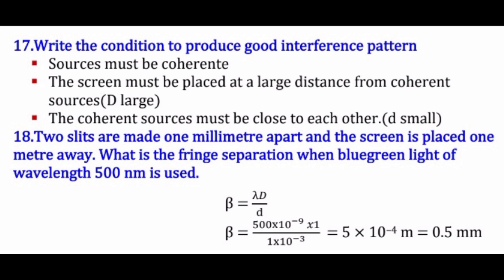The next question is: write the conditions to produce a good interference pattern. First, the sources must be coherent — they must have constant phase or constant phase difference, and the same amplitude, frequency and wavelength. Second, the screen must be placed at a large distance from the coherent sources. Third, the coherent sources S₁ and S₂ must be close to each other — small value of d.